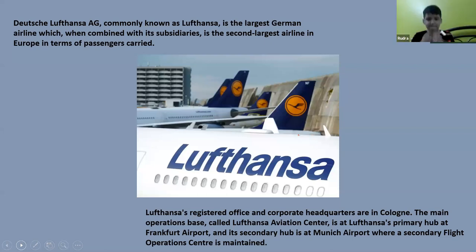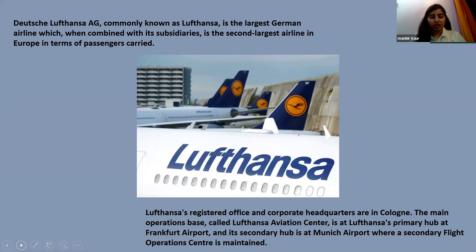Lufthansa is the largest German airline. When combined with its subsidiaries, it becomes the second largest airline in Europe in terms of passenger numbers. Lufthansa's registered office is in Cologne, and the main operational base — called the Lufthansa Aviation Center — is at Lufthansa's primary hub.